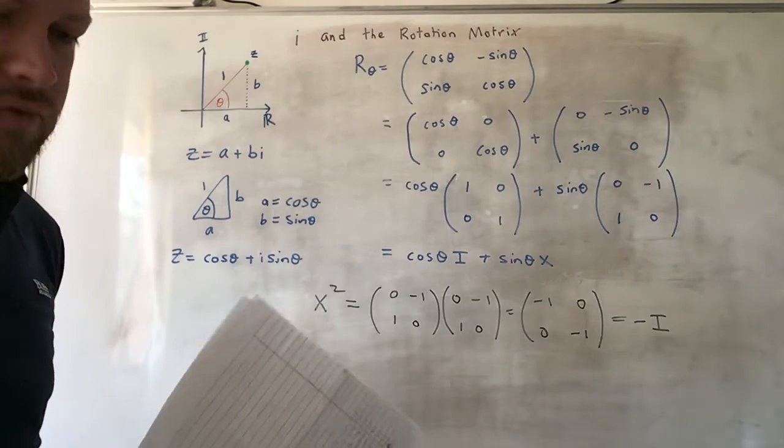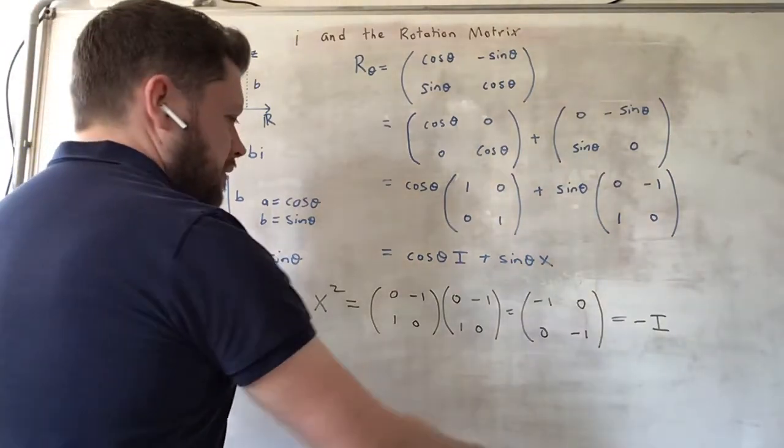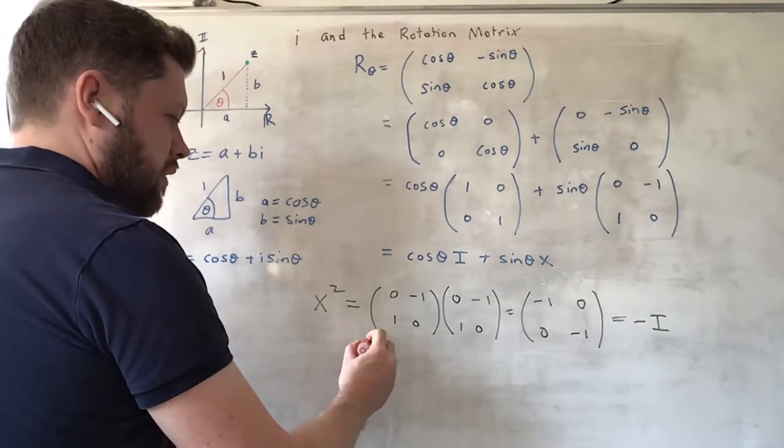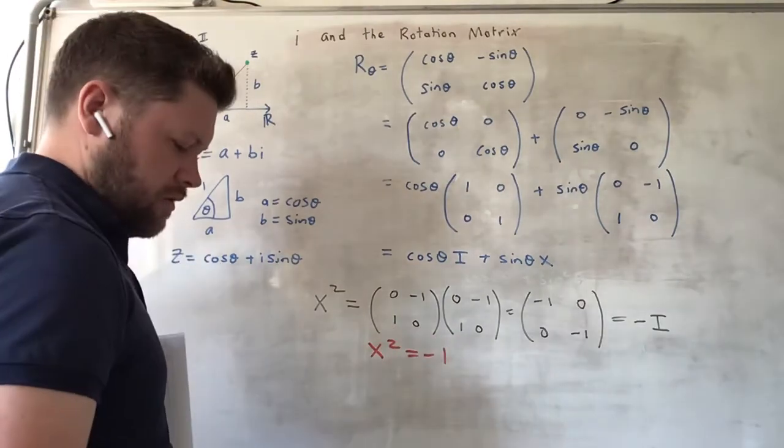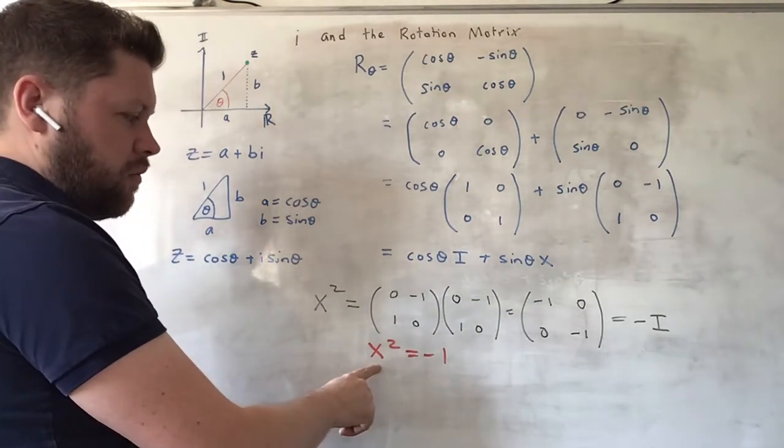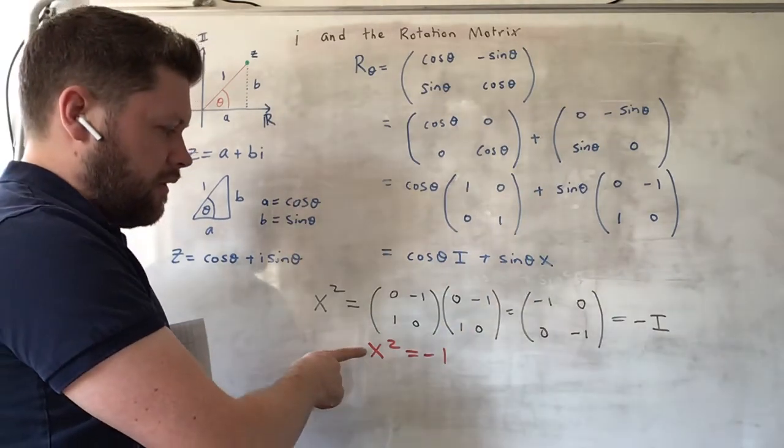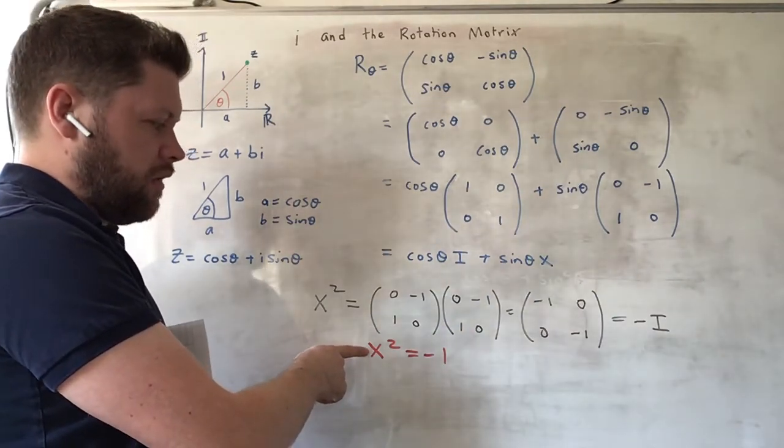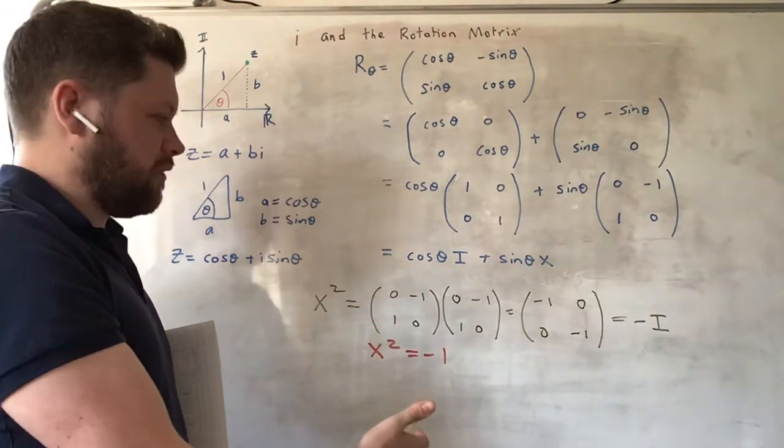Well in matrix form, this is almost identical to an equation we've seen before, which is X squared equals minus 1. X squared equals minus 1 only has complex solutions if we're talking about numbers here, rather than matrices. This is the matrix equivalent of that.